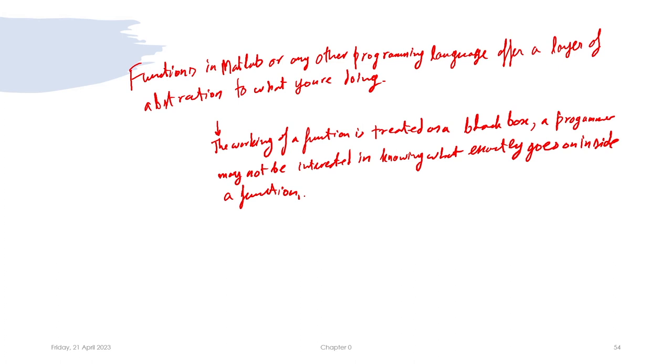For the purpose of this course, for example, if you want to calculate the sine of something, you invoke the sin function directly. You are not interested in whether it sums a series or constructs a triangle — you just want the sine of x given x in radians. Similarly, when you invoke a function you do not want to get into the details of how it works unless you are specifically working on that. You simply want to give it an input and get back the output. That is why functions provide a layer of abstraction.